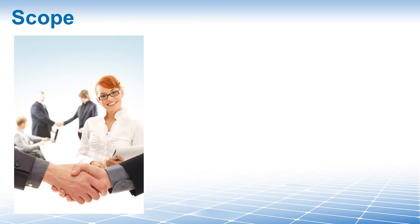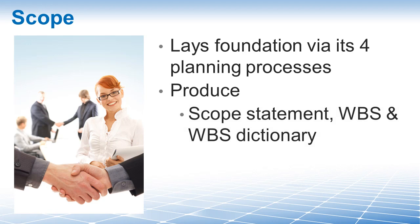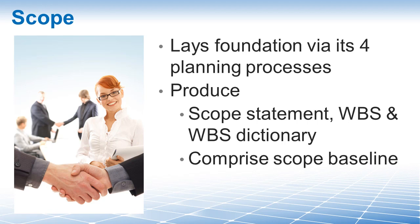Before we discuss key concepts, let me go through a few more pointers on project scope. Project scope management lays the planning foundation through the four planning processes. This is where we define how the project scope will be defined, validated, and controlled. Here we produce the scope statement — which often contains scope description, acceptance criteria, deliverables, constraints, and assumptions. We also create the WBS and the WBS dictionary. These three items — the scope statement, the WBS, and the WBS dictionary — make up our scope baseline.